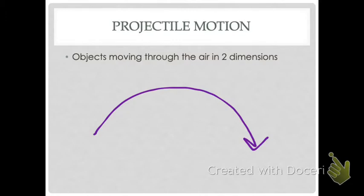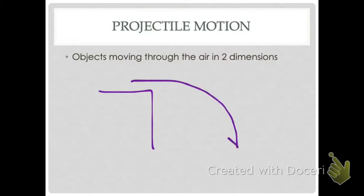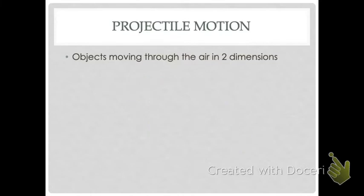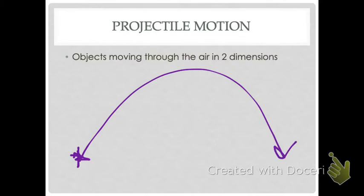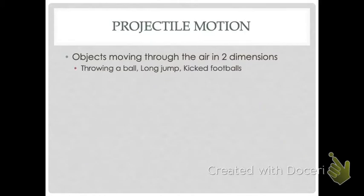We're going to start with something called rolling projectiles — things that leave some surface, roll off the edge, and then fall to the ground. They leave some surface and let gravity do the work. We'll also get into launched projectiles, which are the ones that go up and come back down. So we'll go through a progression of these types. Projectiles mean anytime we move through the air in two dimensions — throwing an object, jumping through the air, kicking something.